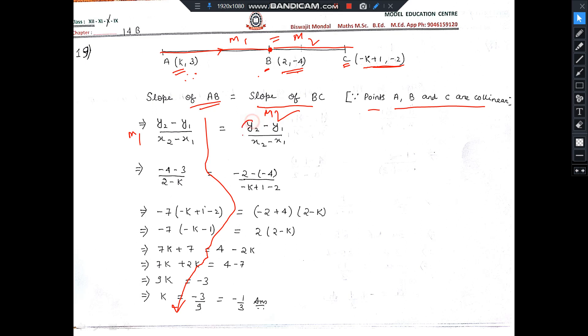The same formula: y2 minus y1 by x2 minus x1. You consider x1, y1, x2, y2, then put the values and make them equal. You are getting the value of K, and that's all.